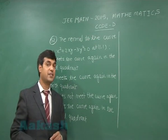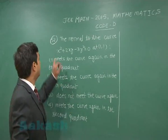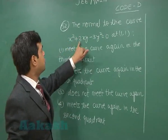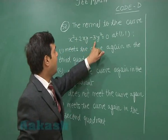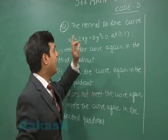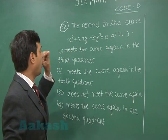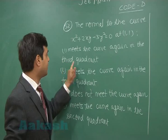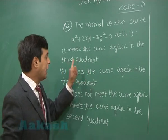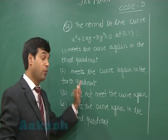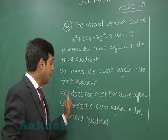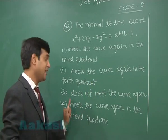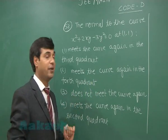Let us go to question number 52: the normal to the curve x² + 2xy − 3y² = 0 at (1,1). The options are: meets the curve again in the third quadrant, meets it in the fourth quadrant, does not meet the curve again, or meets it in the second quadrant.